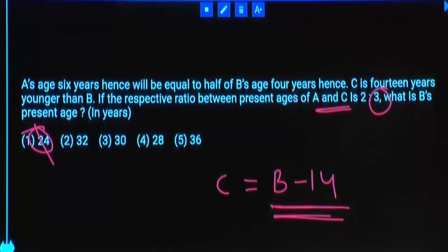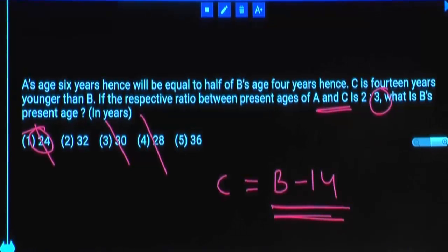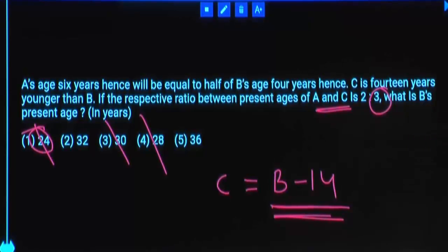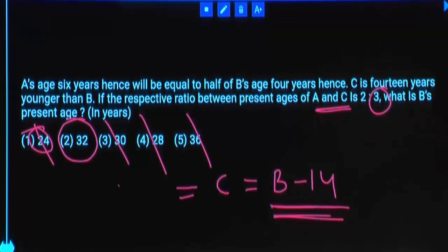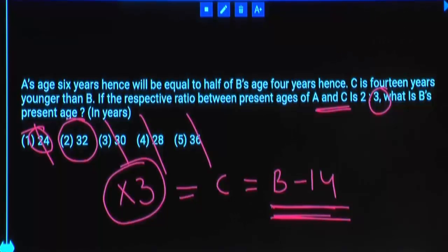Subtract 14 from option 3? 16 — not a 3 multiple. Subtract 14 from 28? 14 — not a 3 multiple. 36 minus 14 = 22 — not a 3 multiple. Only one option works. C's present age must be a 3 multiple; B minus 14 gives C's age, and that should be a multiple of 3.